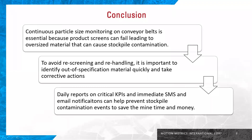In conclusion, continuous particle size monitoring on conveyor belts is essential because product screens can fail, leading to oversized material that can cause stockpile contamination. To avoid rescreening and re-handling, it is important to identify out-of-specification material quickly and take corrective actions. Daily reports on critical KPIs and immediate SMS and email notifications can help prevent stockpile contamination events to save the mine time and money.